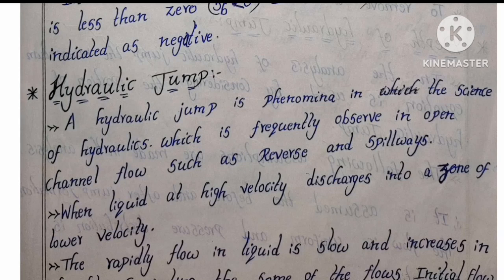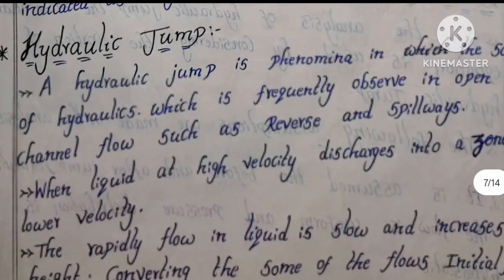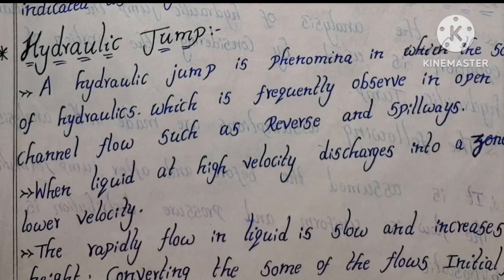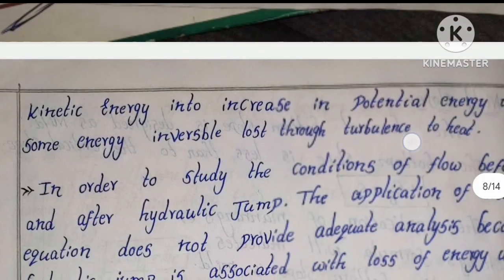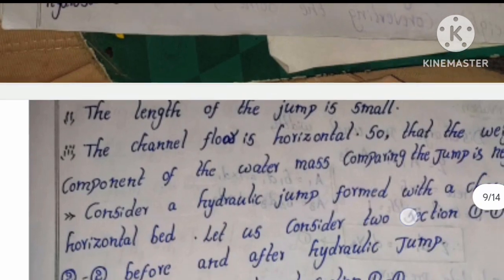Now we are covering hydraulic jump. What is hydraulic jump? Hydraulic jump is a phenomenon in hydraulics which is frequently observed in open channel flow such as rivers and spillways. It involves a transition from higher velocity to lower velocity, and the formation is shown in the direction of the diagram — observe the diagram.